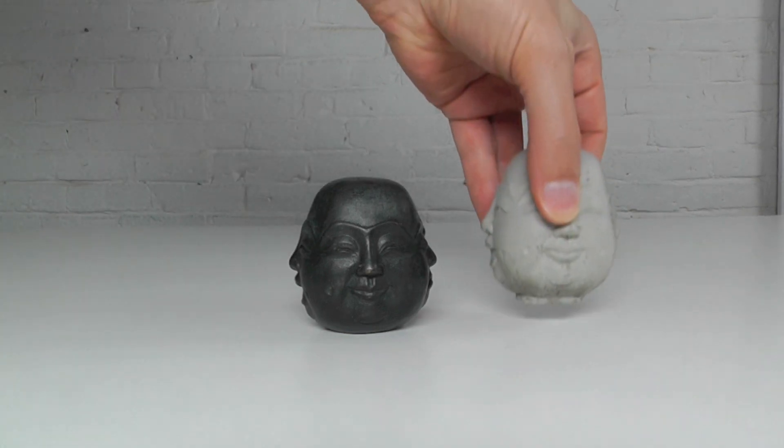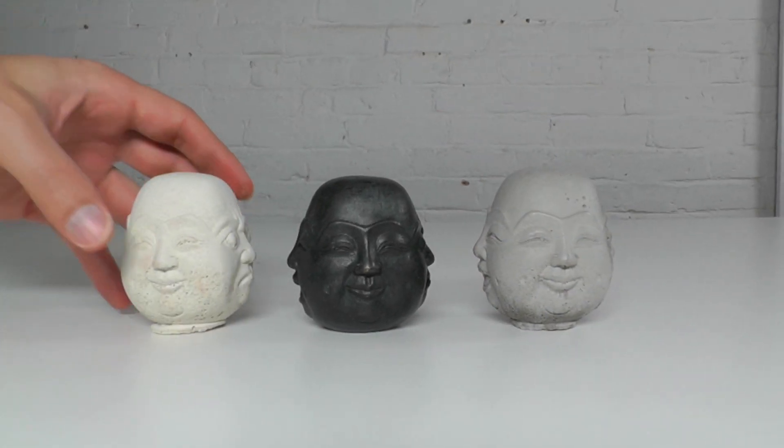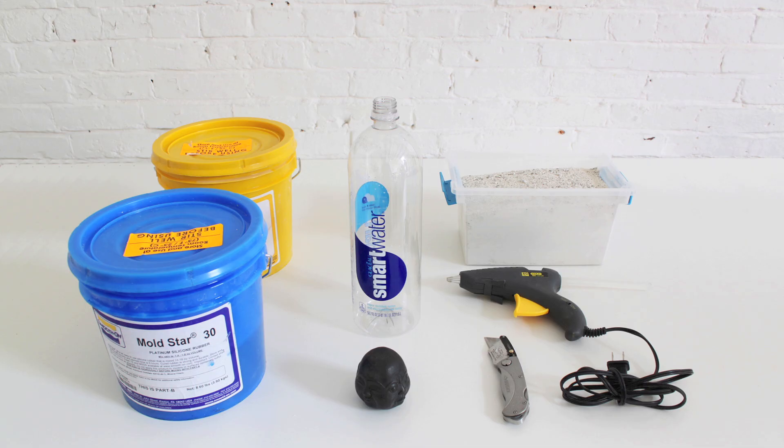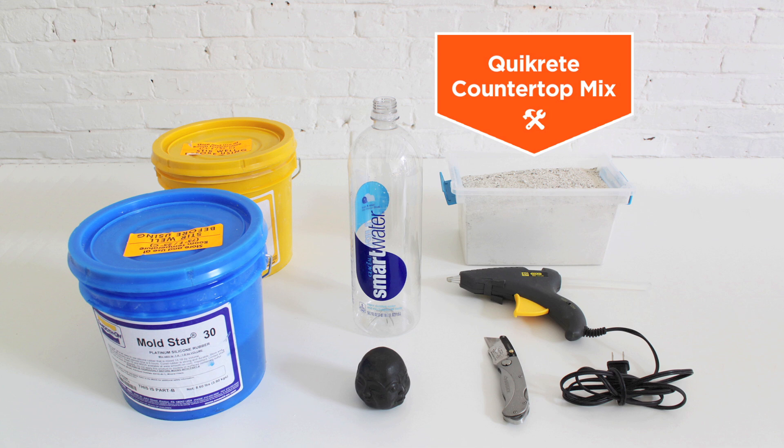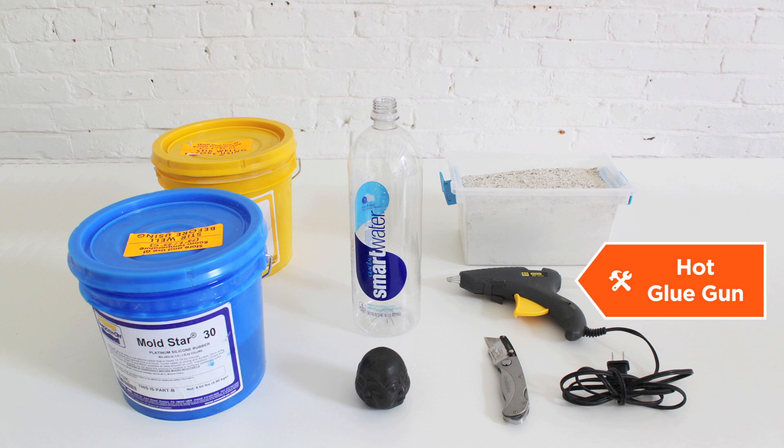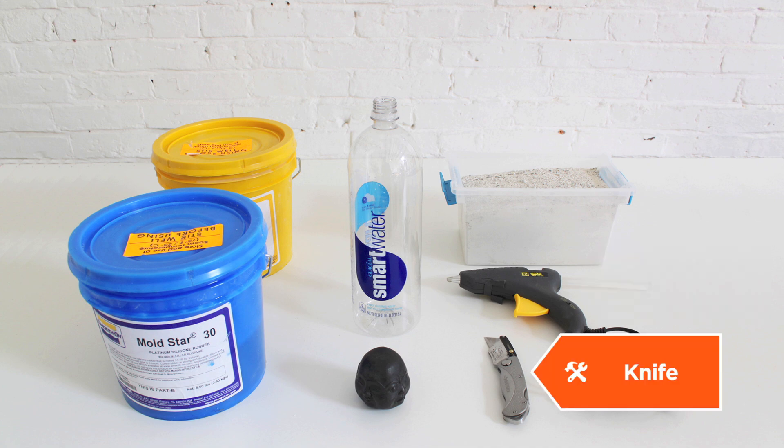Today I'm going to show you how to use silicone to make a concrete copy of an object. I used Moldstar 30 from Smooth-On, Kwikrete countertop mix, a plastic water bottle, a hot glue gun, and a sharp knife.